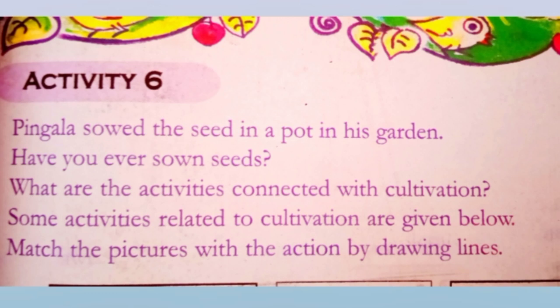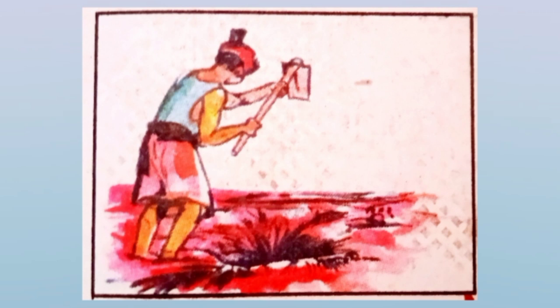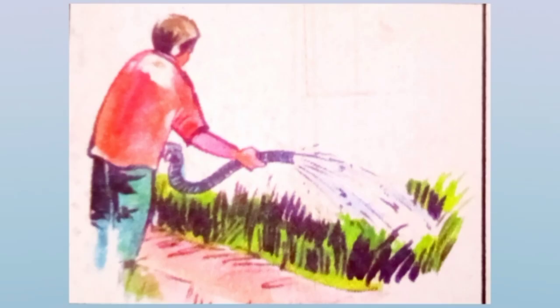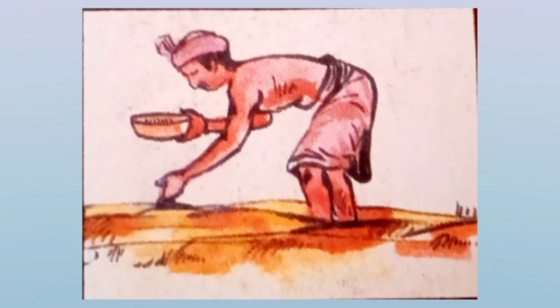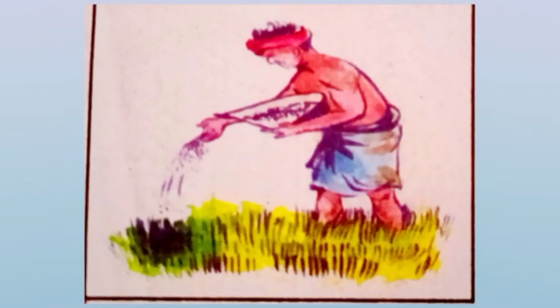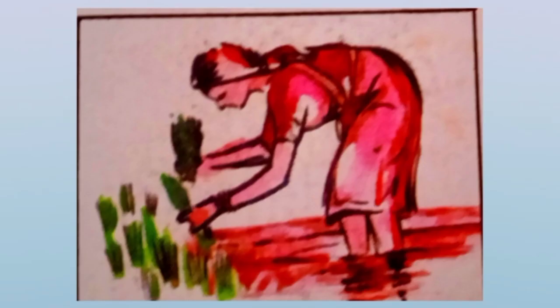Friends, now take page number 29, Activity 6. Pingala sowed the seed in a pot in his garden. Have you ever sown seeds? What are the activities connected with cultivation? Some activities related to cultivation are given below. Match the pictures with the action by drawing lines. Look at this picture — what is this action? Yes, digging. This picture — watering. This one — sowing. What about this one? Manuring. What about this picture? Planting. And last one — reaping. Now we have to match the pictures by drawing lines.